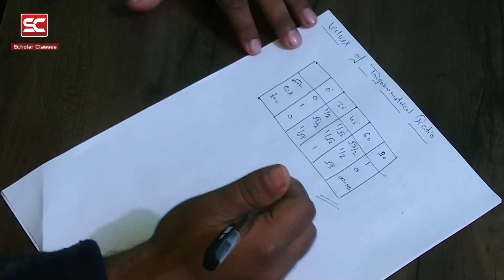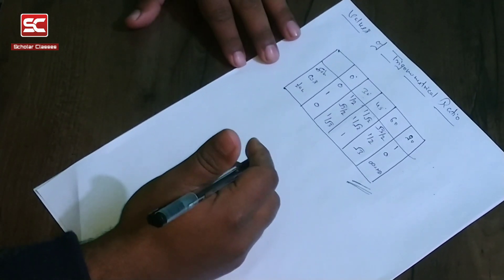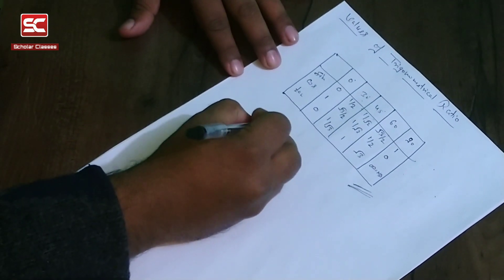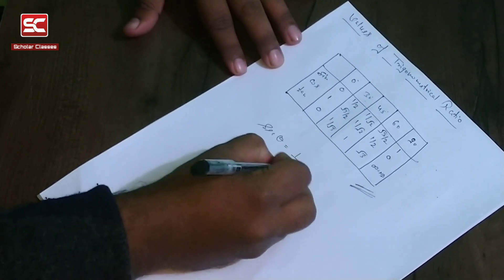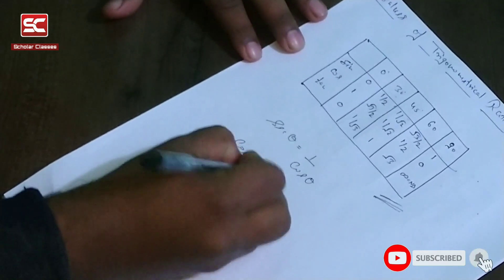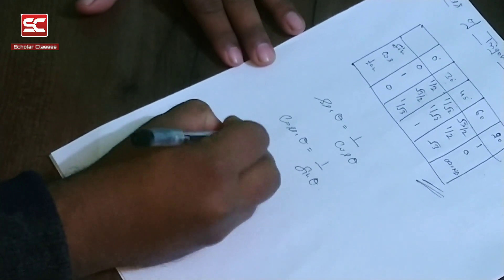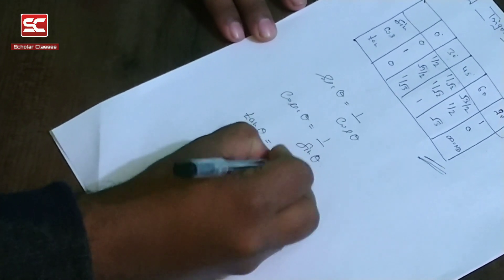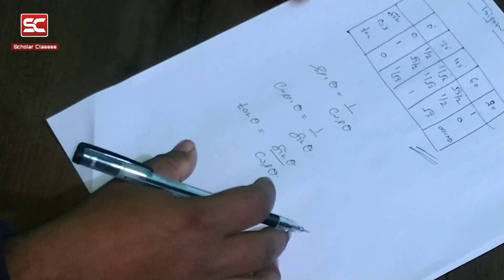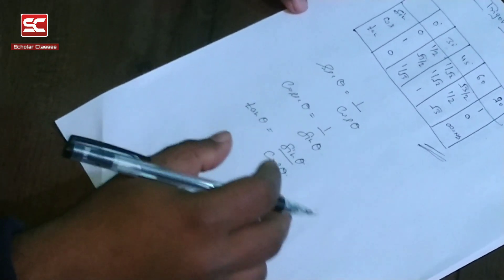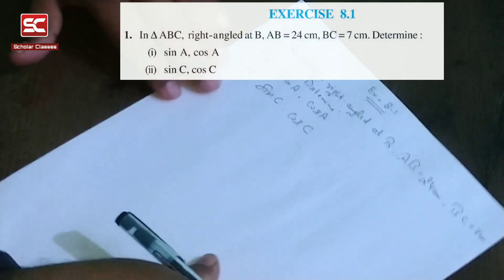Hello friends, welcome to Scholar Classes. Today we are going to discuss some more identities of trigonometrical ratios, like sec theta is equal to 1 upon cos theta, cosec theta is equal to 1 upon sine theta, and tan theta is equal to sine theta upon cos theta. We have learned all identities related to trigonometrical ratios. Now we come to Exercise 8.1, Question Number 1.